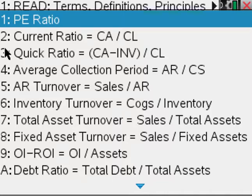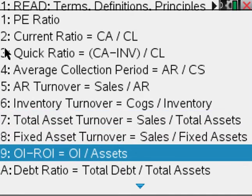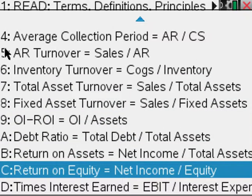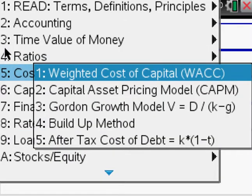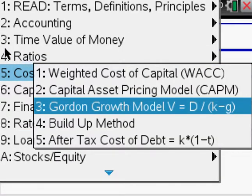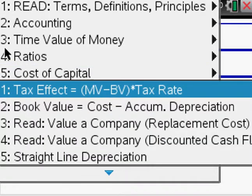So it's very comprehensive. Cost of capital: buildup method, Gordon growth model, buildup method after tax. Capital budgeting: tax effect, straight line depreciation. Why don't we try that one?